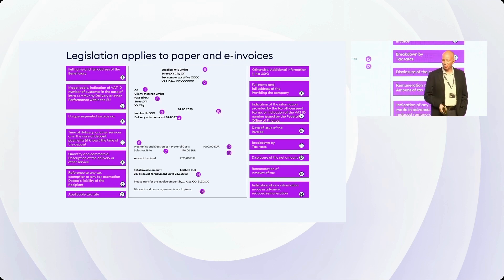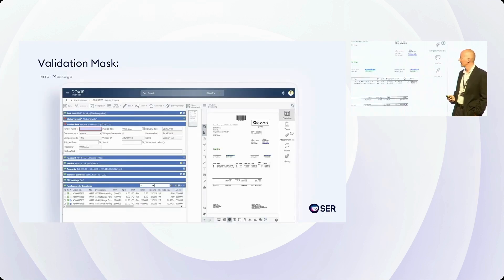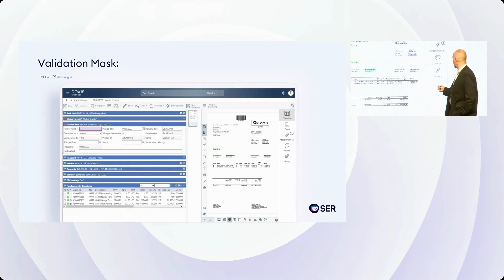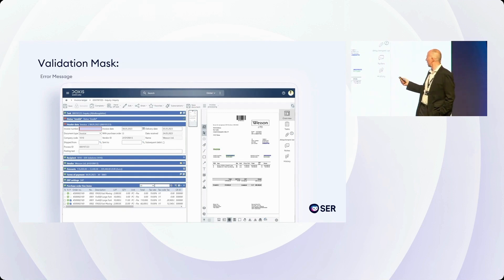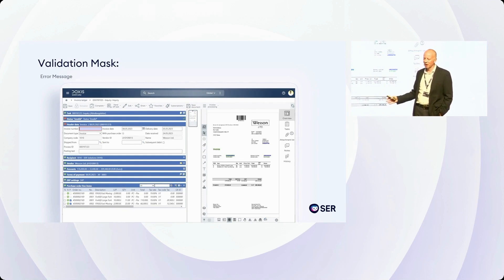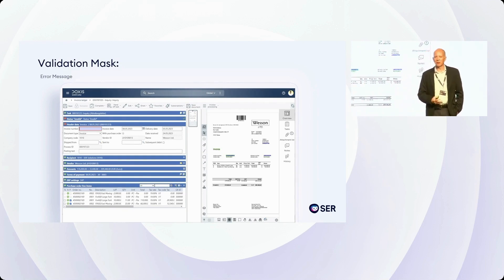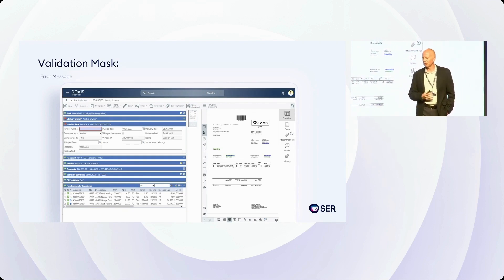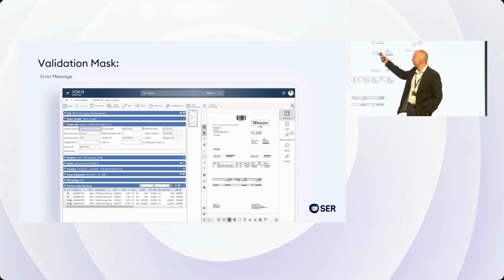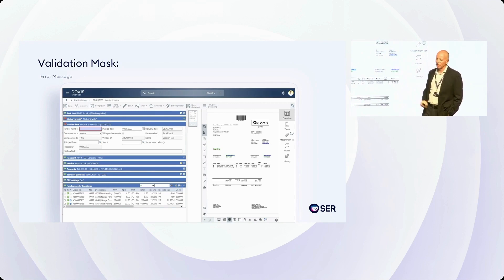To make life as easy as possible for the user, we've built the validation mask. Here we are in DOCSIS. On the right-hand side we've got the document — you may notice we've already highlighted some items on that document. And on the left we've got the validation mask, in which we break down the extracted data into a logical presentation format, grouping for example into header, task, status, recipient, vendor, payment terms, line items, and so on.